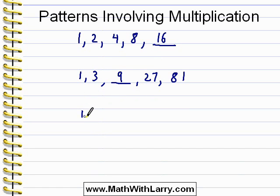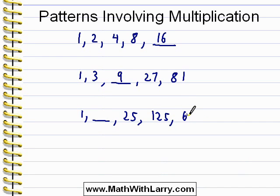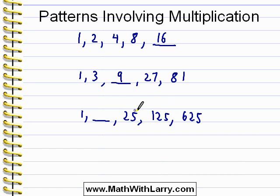One more example: 1, a missing value, 25, 125, and 625. This pattern is growing very quickly, so it's very easy to see that it doesn't involve addition. As you would expect, it involves multiplication. We can easily see that the number being used to multiply each value is 5. Therefore, the missing value is 5. 1 times 5 is 5, 5 times 5 is 25, 25 times 5 is 125, and so on.